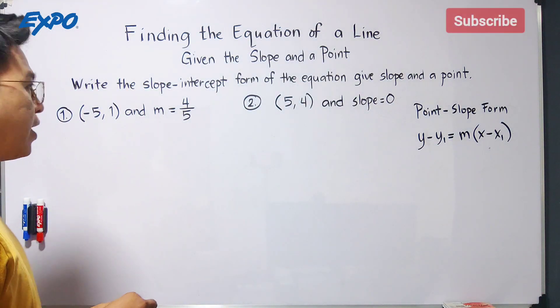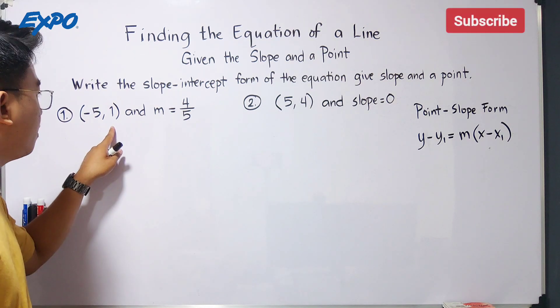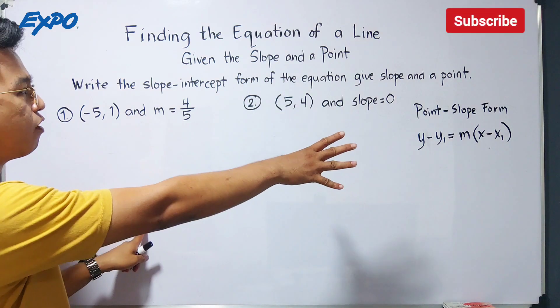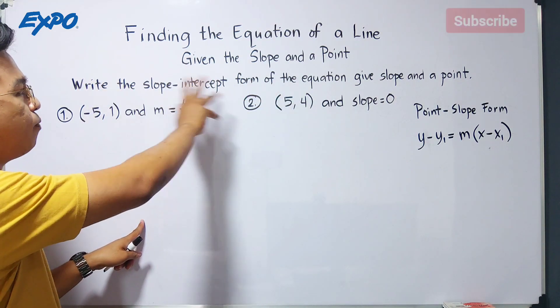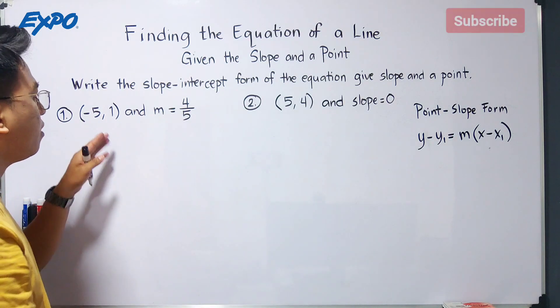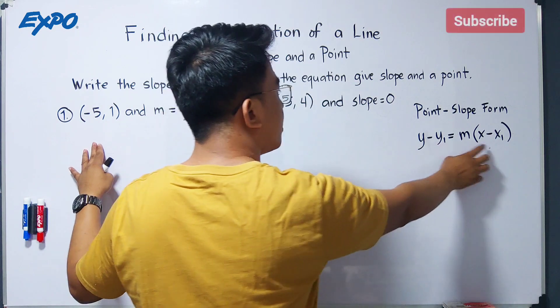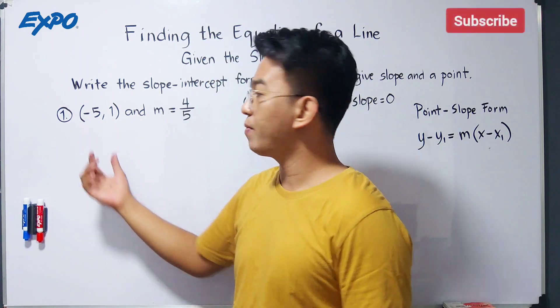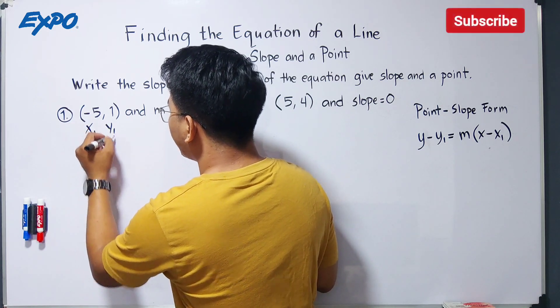Remember guys, this is what our given looks like. We have here negative 5 comma 1 and your slope is 4 over 5 wherein we will use that formula and we will try to write the equation in slope-intercept form. So here, the slope is letter m. Since we have this one given ordered pair, this will be your x sub 1 and this is your y sub 1.